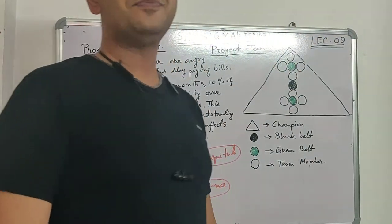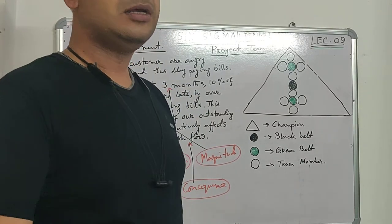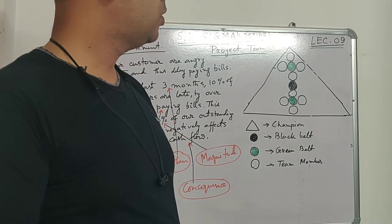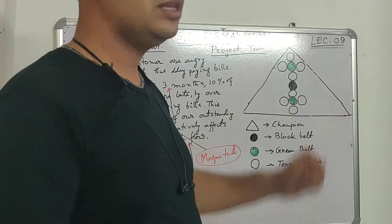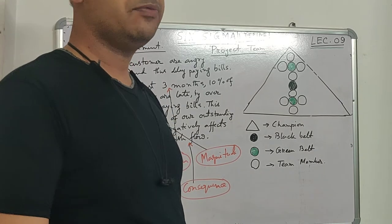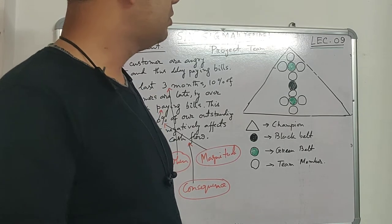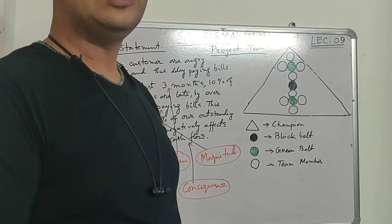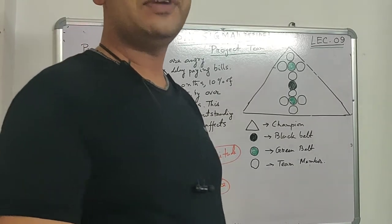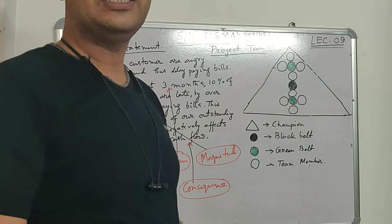Welcome to our tech management education channel. We are running a Six Sigma series, Black Belt full course. We have already covered eight lectures; this is our ninth lecture. In the last eight lectures we covered the Define phase — what is Six Sigma, standard deviation, average, CTQ critical to quality, QFD, and other aspects of the Define phase. Please go through our earlier videos for full knowledge of the Define phase, as this is the final lecture on it.